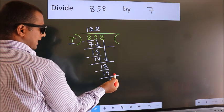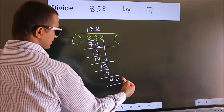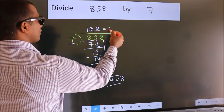No more numbers to bring down. So we stop here. This is our remainder. This is our quotient.